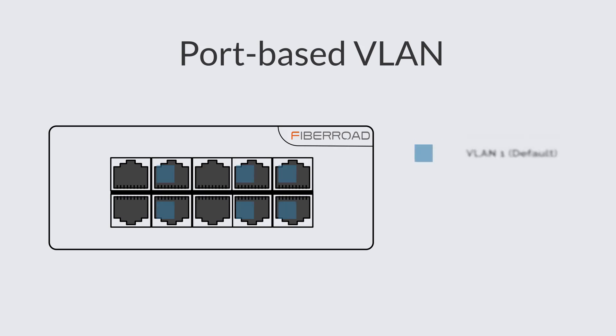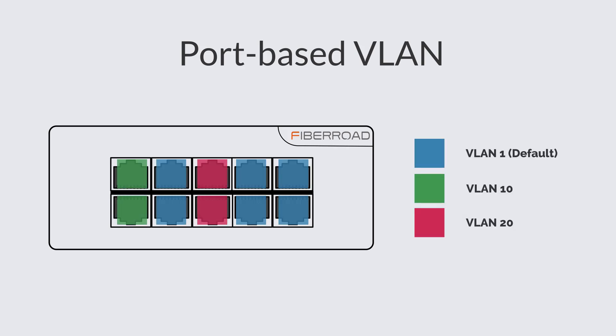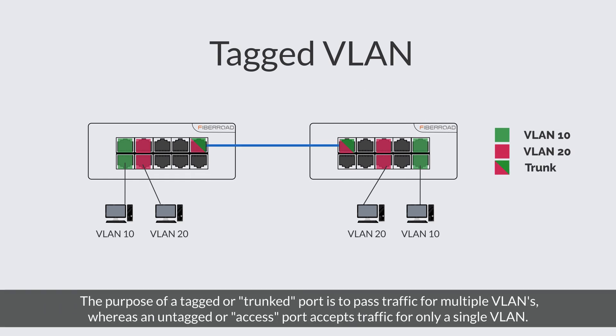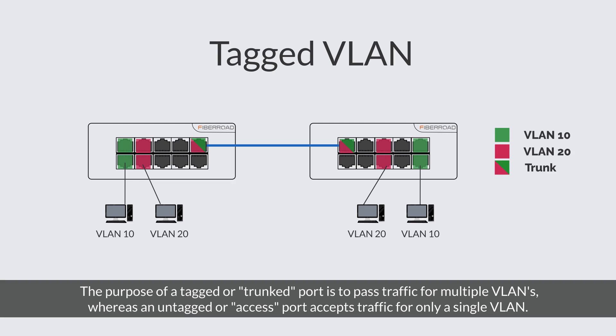Port-based VLANs group VLAN members by port. A port forwards traffic for a VLAN only after it is assigned to that VLAN. VLAN-enabled ports are generally categorized in one of two ways: tagged or untagged. These may also be referred to as trunk or access, respectively.